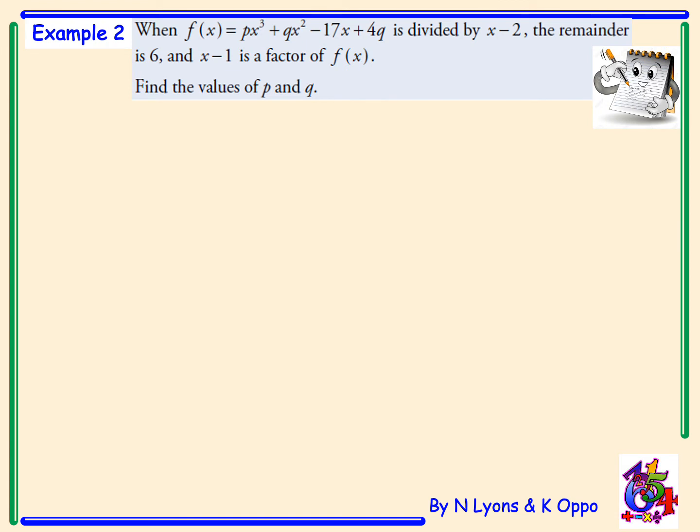Example 2. When f(x) is equal to px cubed plus qx squared minus 17x plus 4q is divided by x minus 2, the remainder is 6, and x minus 1 is a factor of f(x). Find the values of p and q. So, you'll notice in this example, we have two missing coefficients, q and p, but we also have two bits of information that will help us find those missing coefficients.